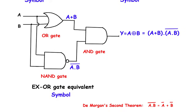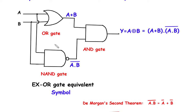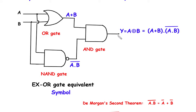Here we can see this is the XOR gate equivalent symbol. So here this is OR gate, this is NAND gate, and this is AND gate. So its output will be similar to XOR gate.